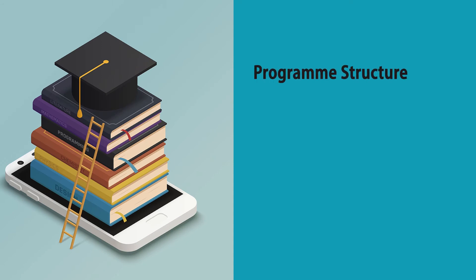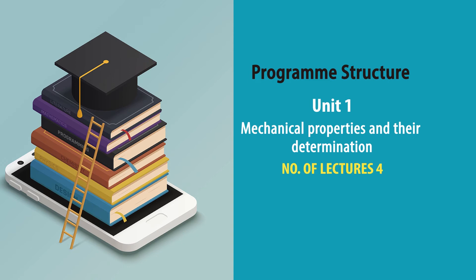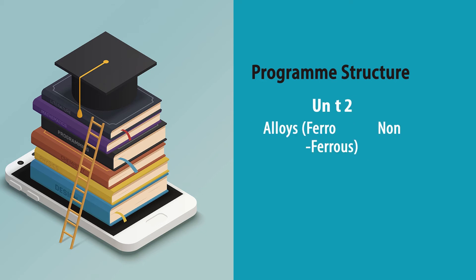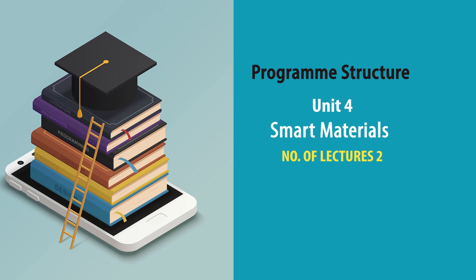A brief description of the course structure: there will be 2 blocks. Block 1 shall be named Material Types and Properties. Under this block, Unit 1 shall cover mechanical properties and their determination. Unit 2 shall discuss alloys, both ferrous and non-ferrous. Unit 3 shall describe ceramics, refractory and abrasive materials. Unit 4 shall discuss smart materials, which are very prevalent in today's society and are very important.